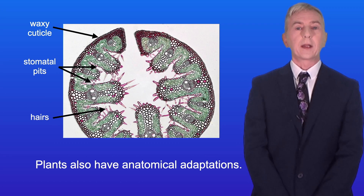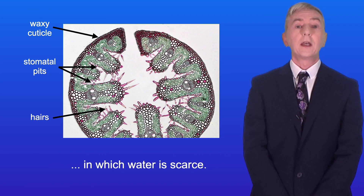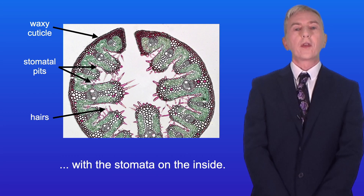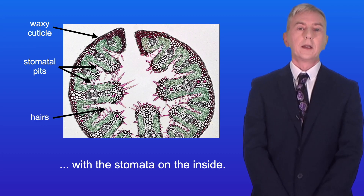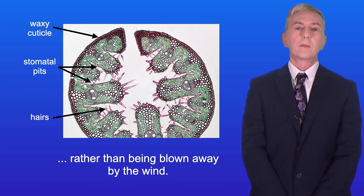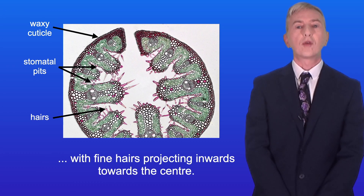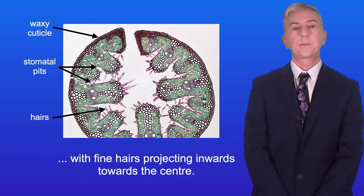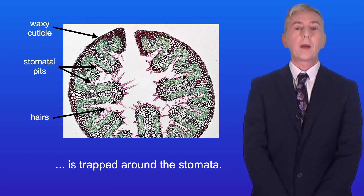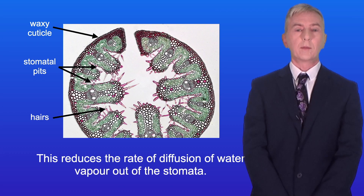Plants also have anatomical adaptations. For example, marram grass is adapted to live in arid conditions in which water is scarce. The leaves of marram grass are rolled up, with stomata on the inside. Moist air is trapped within the tube rather than being blown away by the wind. The stomata in marram grass are found in sunken pits, with fine hairs projecting inwards towards the centre.